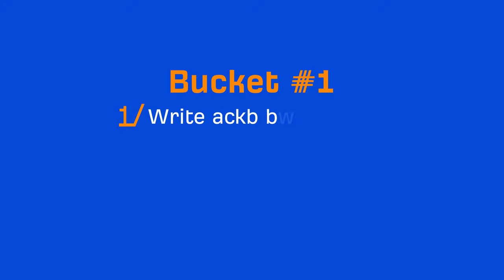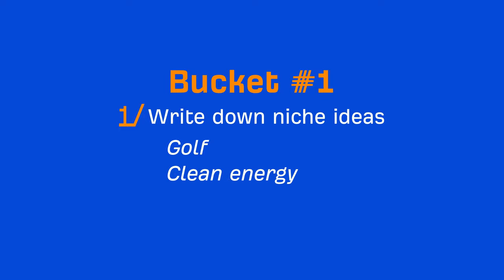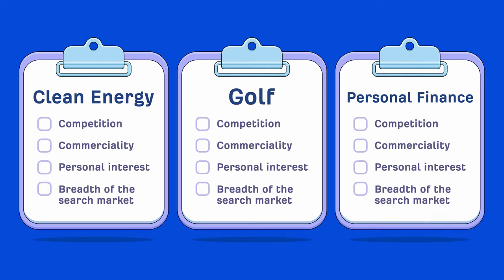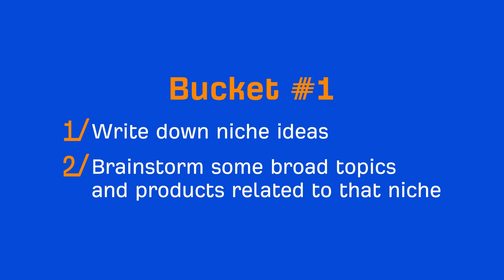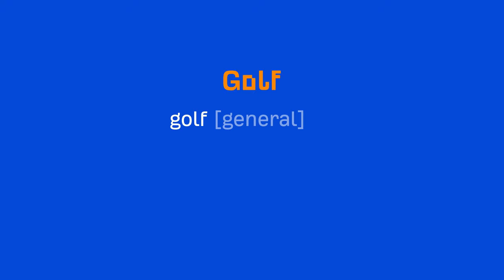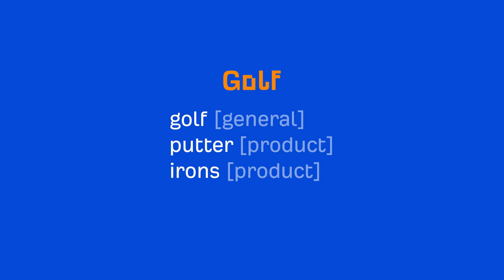Assuming you already have a general idea of niches that interest you, the first thing you'll want to do is write them down. For me, that will be topics like golf, clean energy, and personal finance. Because these are all things that I'm interested in, we can add a plus to the personal interest qualification factor. For each of these topics, you'll want to brainstorm some broad topics and products that are related to that niche. For example, if we were to do this for the golf niche, I'd jot down ideas like golf, putter, irons, and wedge.